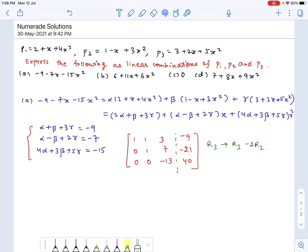This can be written as a linear combination of these three vectors. We can solve this by reverse substitution. That would give us 13 times gamma equals 40, from that we get the value of gamma as negative 40 over 13. And this would give us beta plus seven times gamma equals negative 21, or beta equals negative 21 minus seven times gamma.